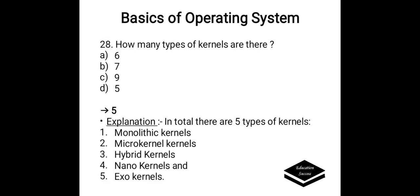How many types of kernels are there? Option A. 6, B. 7, C. 9, D. 5. Correct answer is option D, 5. In total there are 5 types of kernels: Monolithic kernel, Micro kernel, Hybrid kernel, Nano kernel, and Exo kernel.